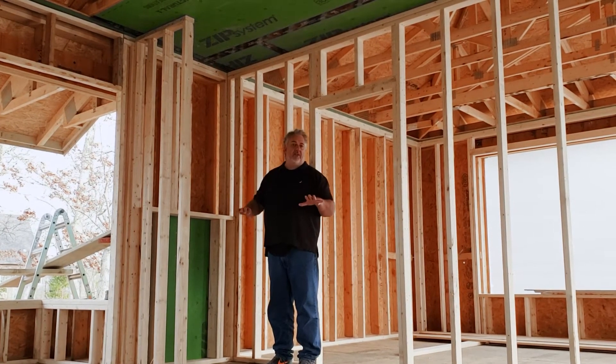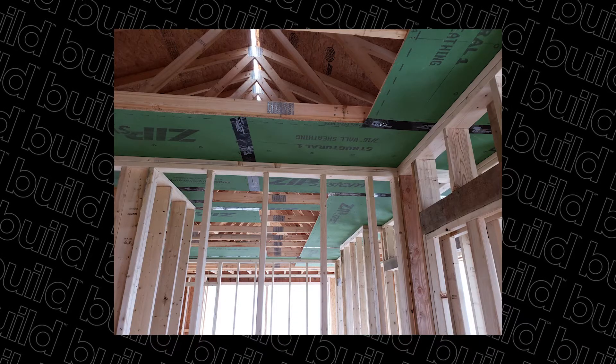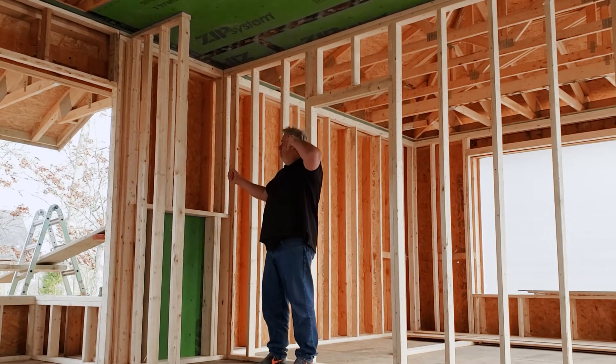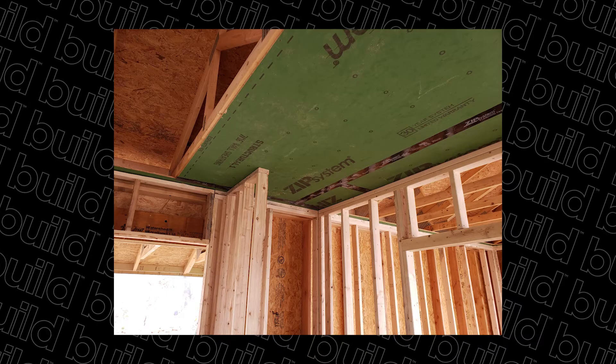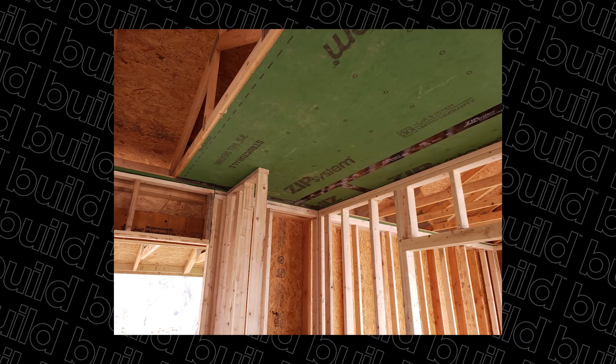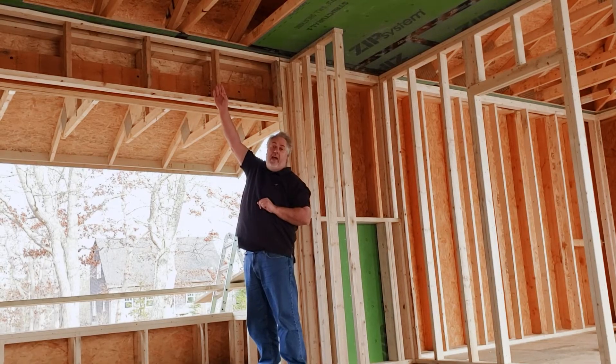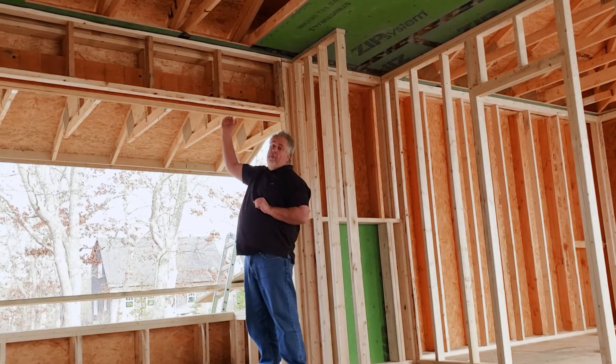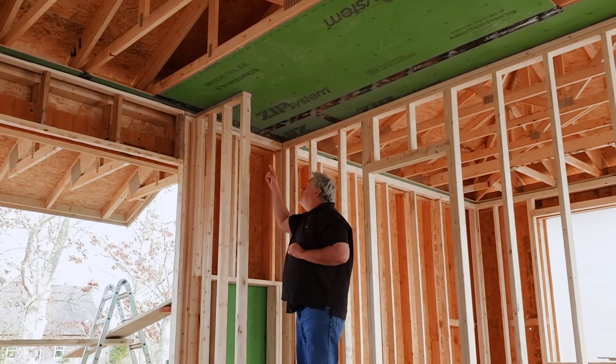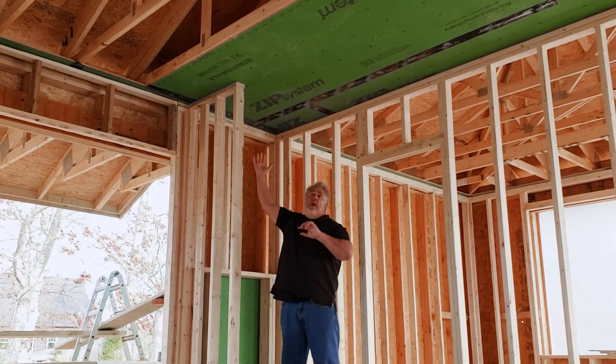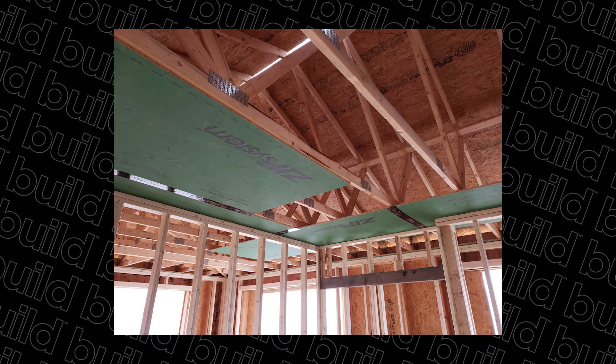This section of the house is a single story. So we basically have the top of our air barrier right here above me. You can see that here, Farley chose to go up the wall with the zip wall, and then we transition across the top of the wall with this 16-inch piece that gives us a little flange there that we can then attach to. So now our air barrier goes up, it comes across those top plates, and then basically you can take zip sheathing and we can run it along the bottom of the trusses here and create that continuity of our air barrier.